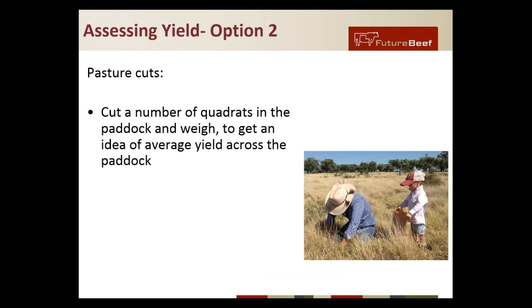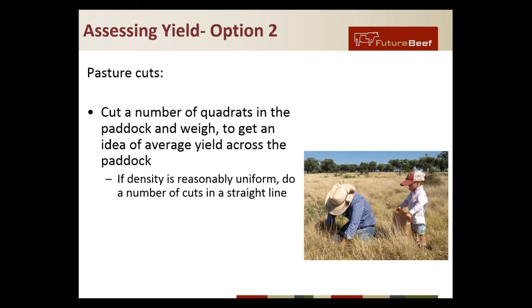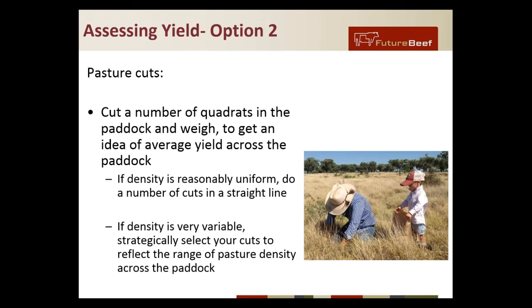The other option is to go out in the paddock and take a number of cuts. You'd get a one-square-metre quadrant, take a number of cuts, weigh them, and then with some calculations you can work out how much pasture you actually have in the whole paddock. If the density of pasture is reasonably uniform you can do a number of cuts in a straight line — maybe take 50 steps between cuts and get five to ten cuts along it. If the density is more variable with some areas of high yield and some low yield, you can be more selective on where you take cuts and do it more strategically across the various areas.